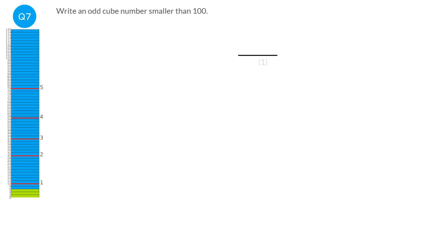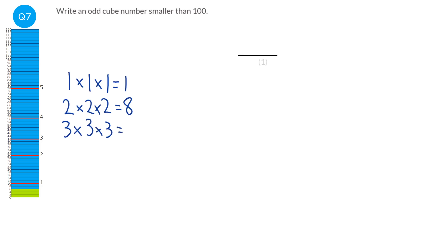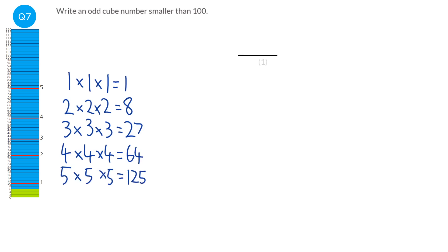A cube number is the answer when you multiply a whole number by itself three times. One times one times one is one. Two times two times two is eight. Three times three times three is twenty-seven. Four times four times four is sixty-four. Five times five times five is one hundred and twenty-five. This question asks us to find an odd cube number smaller than a hundred. That gets rid of eight and sixty-four, and one hundred and twenty-five is too big. So the answer is either one or twenty-seven.